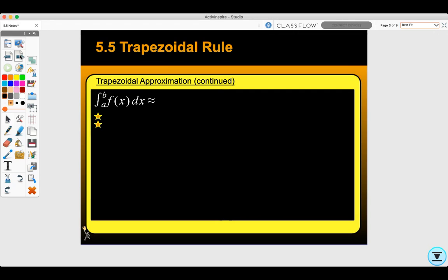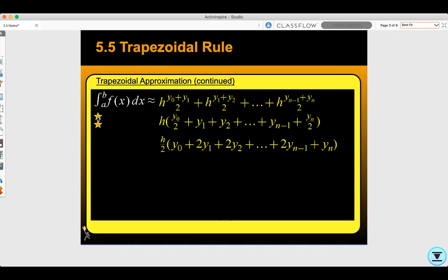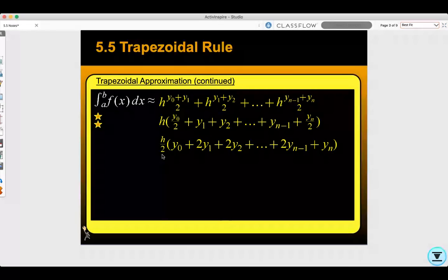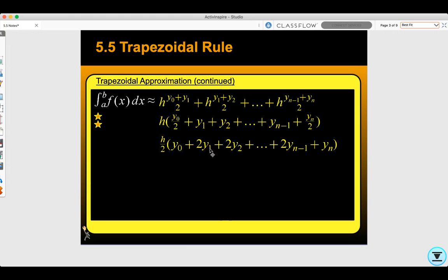So the trapezoidal approximation to approximate the area of a definite integral from a to b, we would take each individual trapezoid and add them all together. Each one is multiplied by h, the height of the trapezoids. I could factor out that height and have y₀ divided by 2 plus y₁ plus y₂. Further factoring out that 2, I'd have y₀ plus 2y₁ plus 2y₂, and so forth. Where y₀ is f(a), y₁ is f(x₁), and so on, all the way to yₙ is f(b).